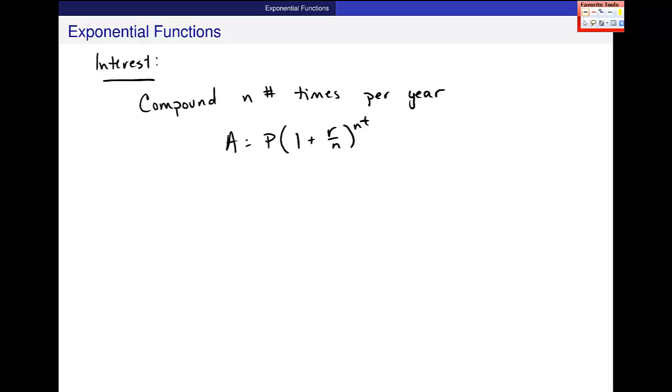Time is really the variable here. P is this principal value, and we call A this future value of your money, right? The value that it will be at some future date. R is this interest rate, and that's a decimal.